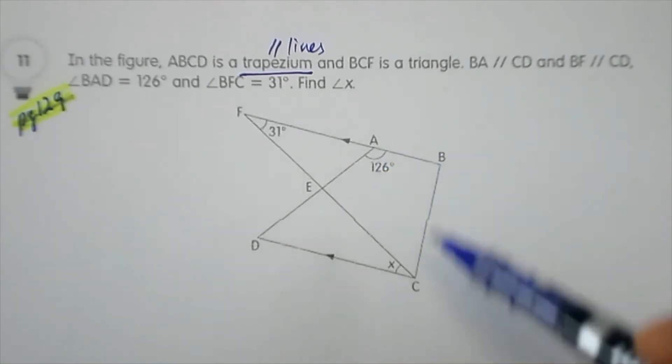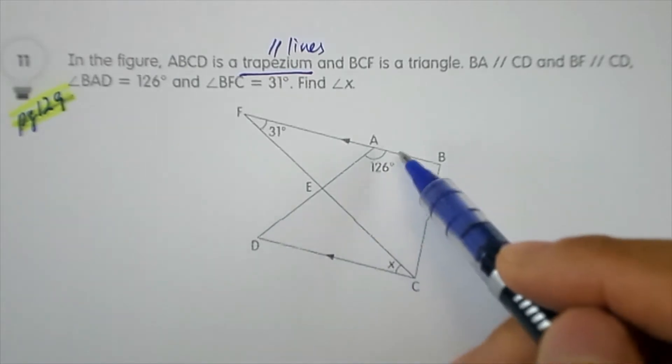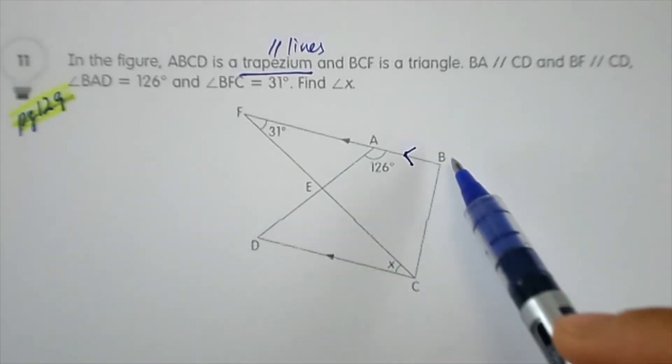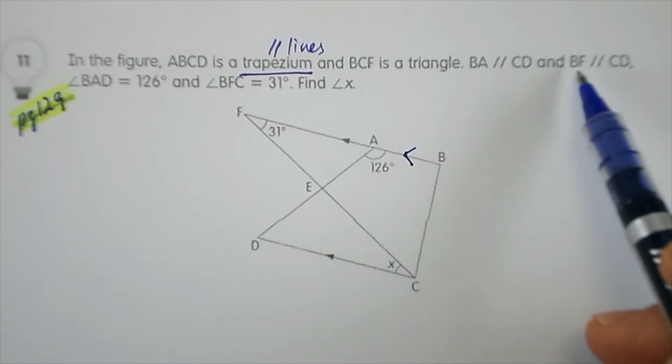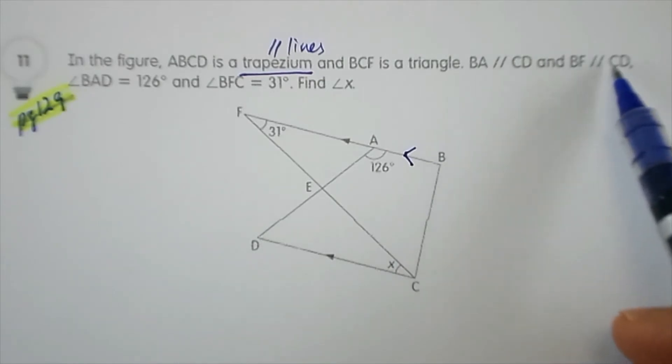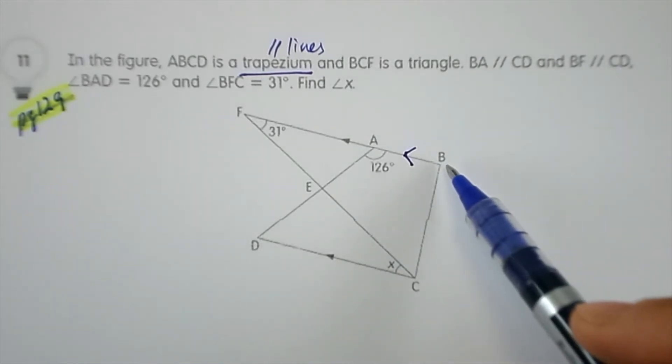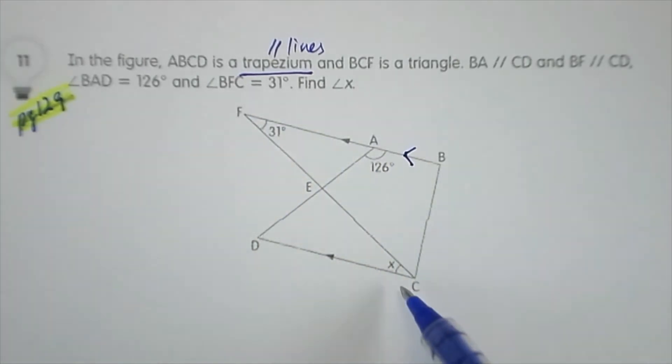BA is over here, parallel to CD. We can draw another arrow here, and BF is parallel to CD. BF, the longer line, is parallel to CD over here at the bottom.